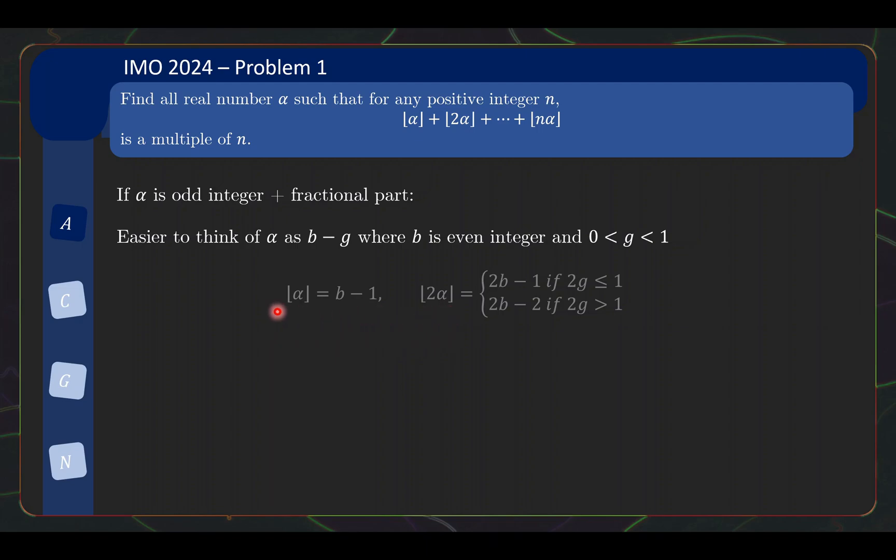Now to give you a sense of how the multiples then interact with the floor function, let us think about a few small cases. So the floor of alpha would be b minus 1 because alpha is slightly below b, so if you floor it, it will be b minus 1. Then floor of 2 alpha, well, if the g is really small, then after doubling it, it will just be slightly below 2b, so the floor will be 2b minus 1.